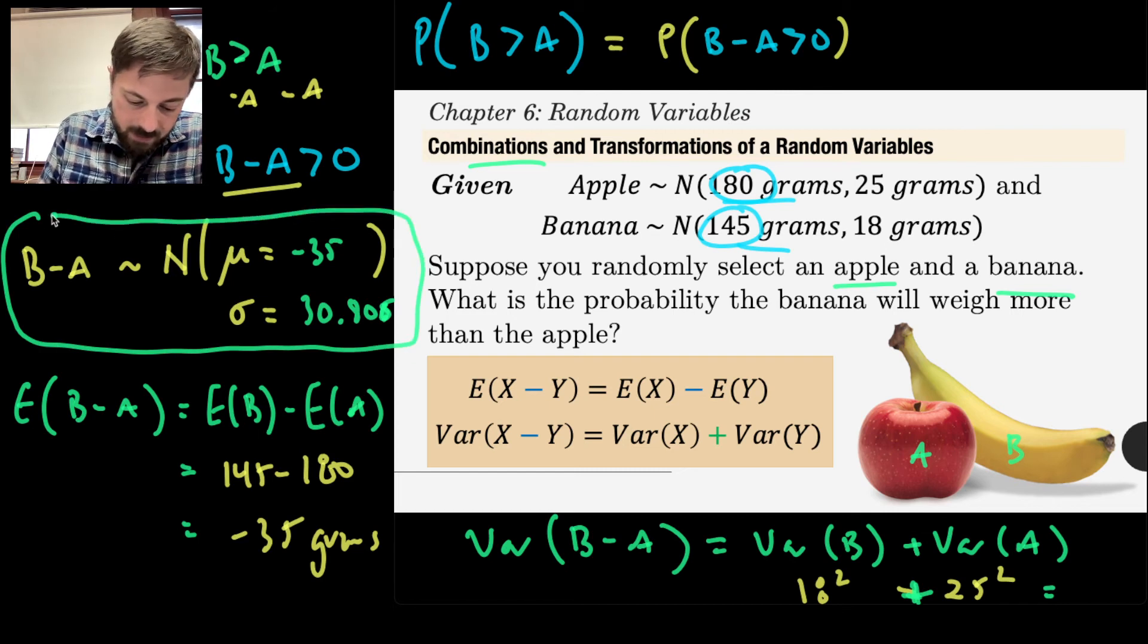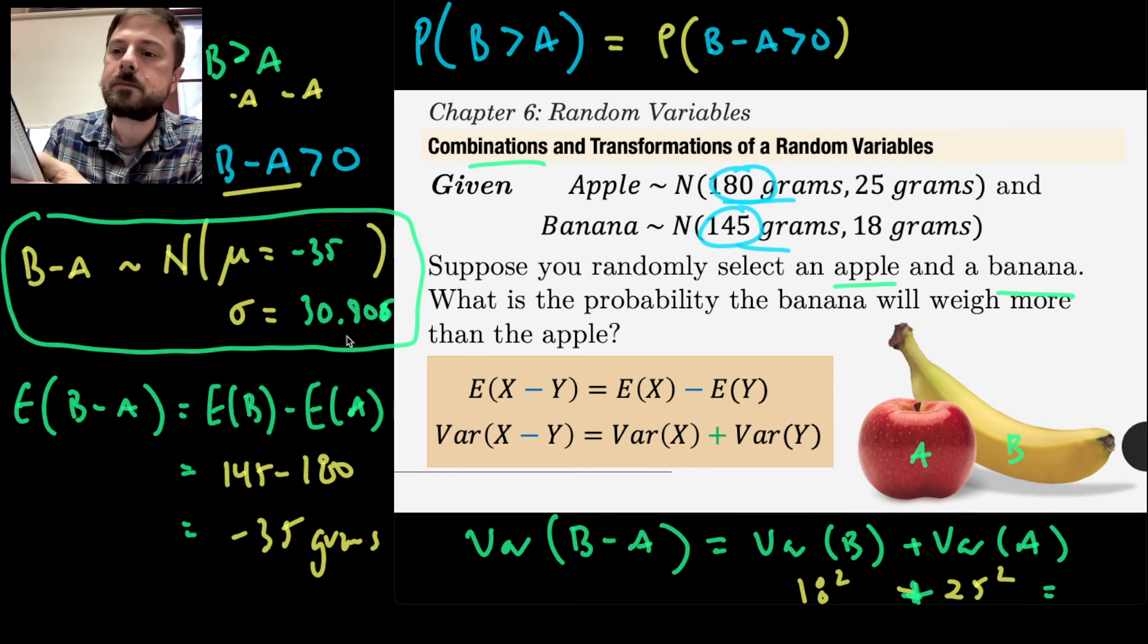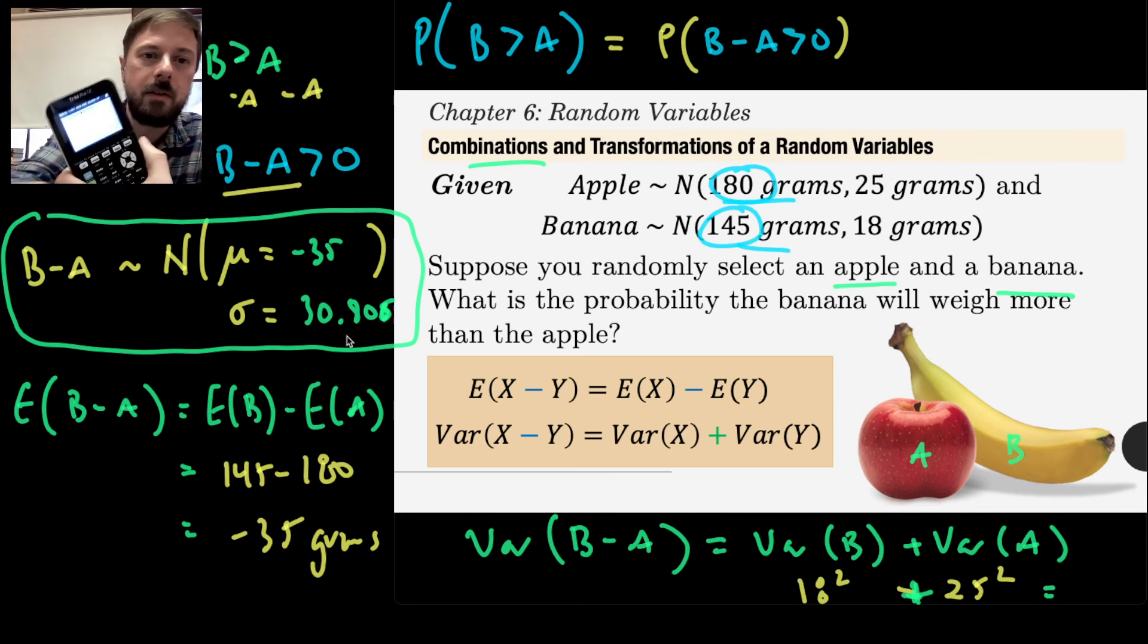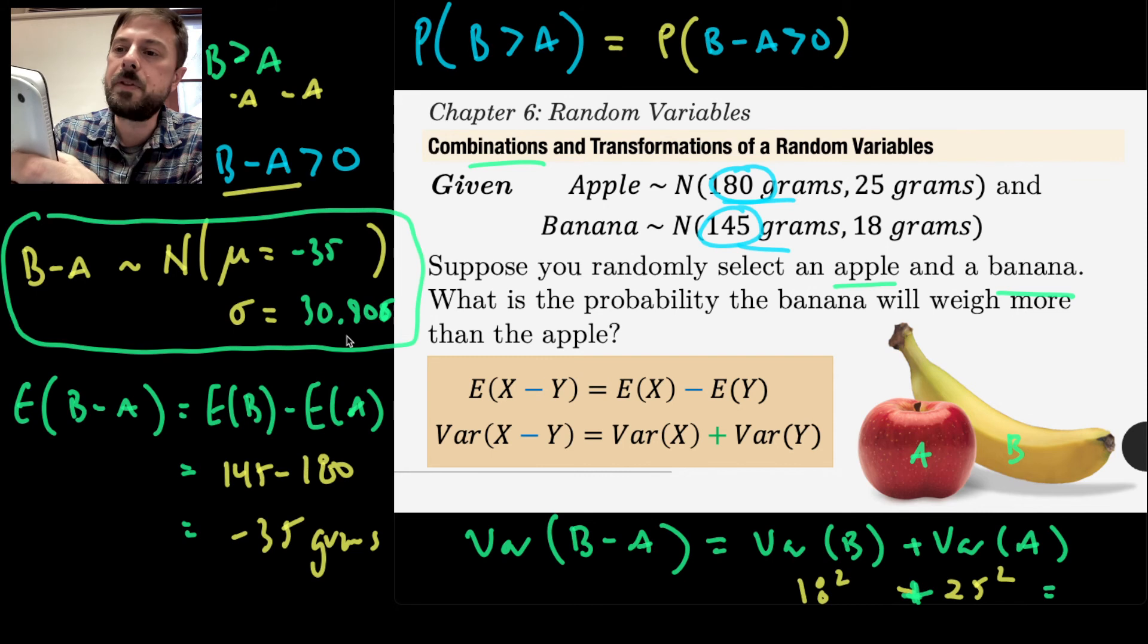I know that the distribution of a randomly selected banana minus randomly selected apple is normally distributed with a mean of negative 35 and a standard deviation of 30 point 806. I can just go into my calculator, normal CDF. I'll plug in, I'm going to go from zero to infinity, because I want to know the probability that the difference is greater than zero. I'll go from zero to infinity with the mean of negative 35 and a standard deviation of 30 point 806.